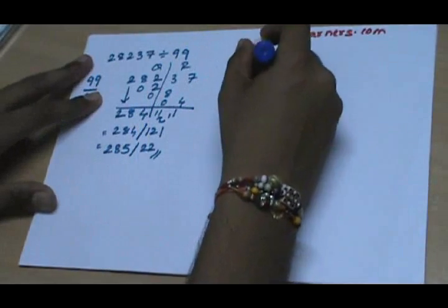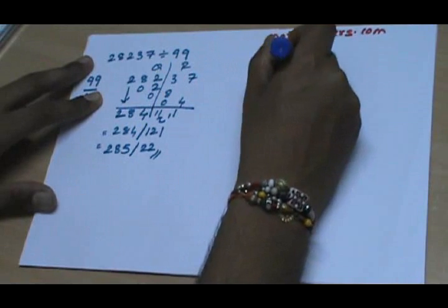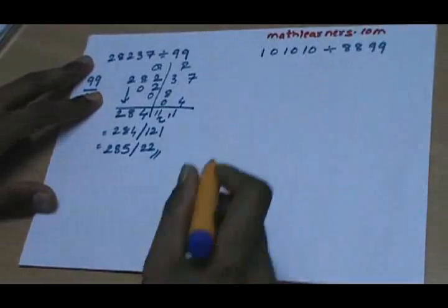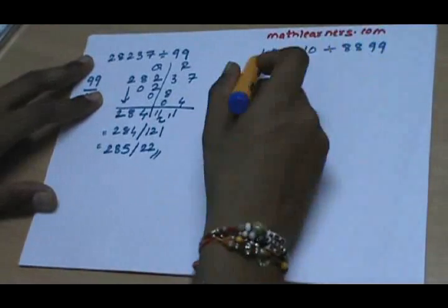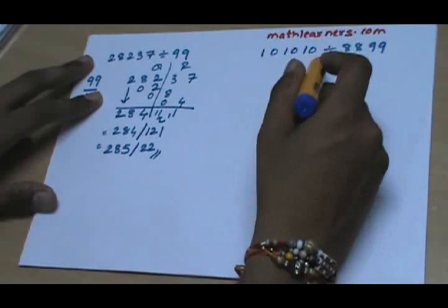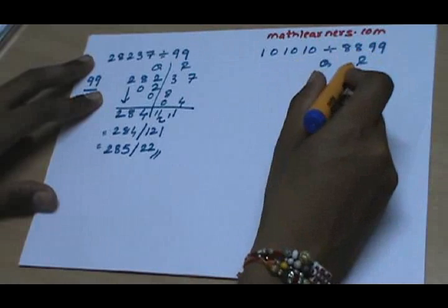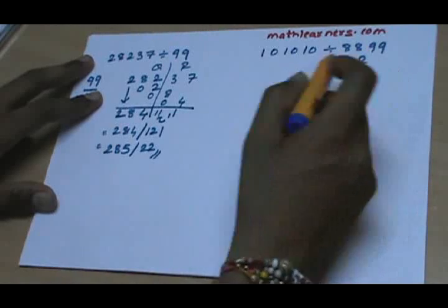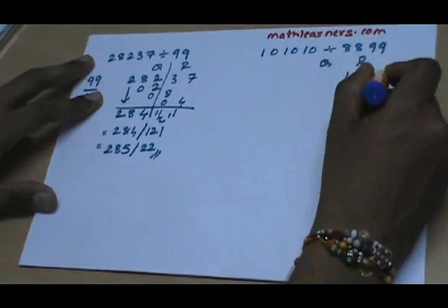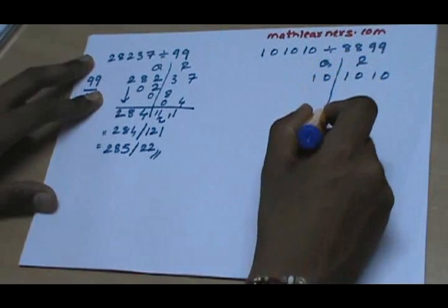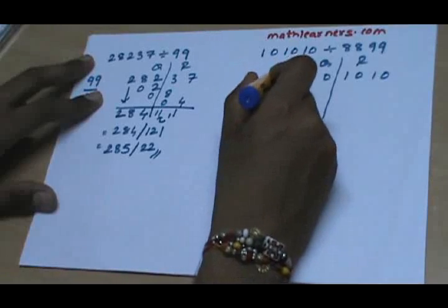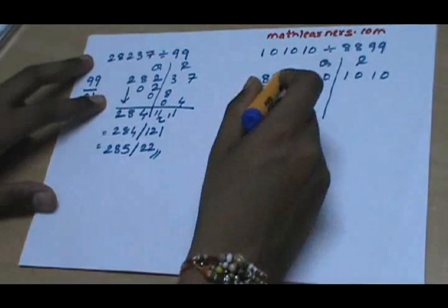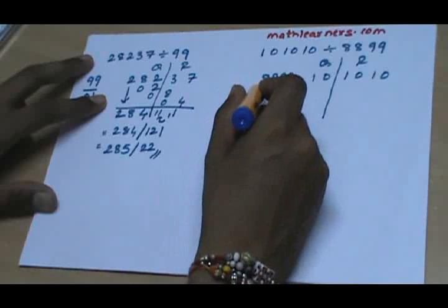Now let's say suppose we want to divide 101010 by 8899. We divide the dividend into two parts — quotient and remainder — such that the remainder has exactly the same number of digits as the divisor. Since the divisor has 4 digits, the remainder part will have 1010 and 10 will be present in the quotient. According to Nikhilam Sutra, all from 9 and last from 10, so 8899 can be written as 1101.